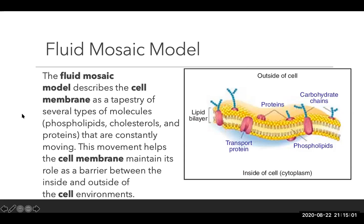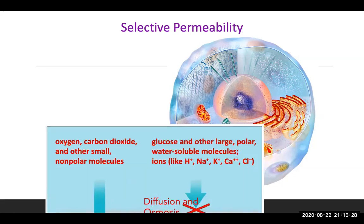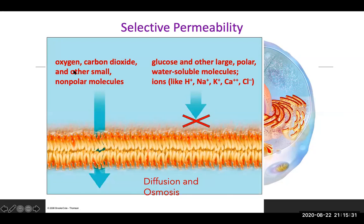The fluid mosaic model describes the cell membrane as a tapestry of several types of molecules that are constantly moving. This movement helps the cell membrane maintain its role as a barrier between the inside and outside cell environments. Selective permeability means that not everything is allowed into the cell — only certain things can get through. In the cell membrane, oxygen, carbon dioxide, and anything small or nonpolar can get through, but glucose and anything large, polar, water-soluble, or ionic is not able to get through.